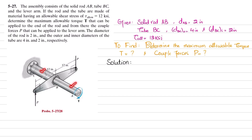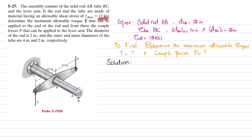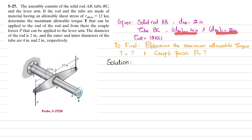So this is solid rod AB and this is tube BC, which has a lever arm. The torque T is applied to this shaft, and the allowable shear stress for both rod and tube is 12 ksi. We need to determine torque T and the couple forces P applied to the assembly. The diameter of rod AB is 2 inches, the outer diameter of tube BC is 4 inches, and the inner diameter is 2 inches.